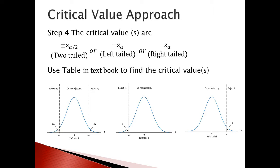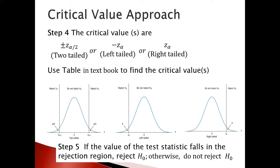Step five: this step is related to rejection or non-rejection of the null hypothesis. If the value of the test statistic falls in the rejection region, then we reject the null hypothesis H-naught. Otherwise, we do not reject the null hypothesis.